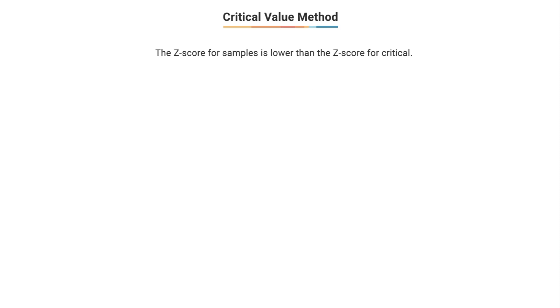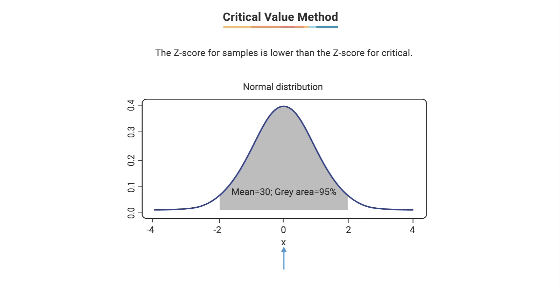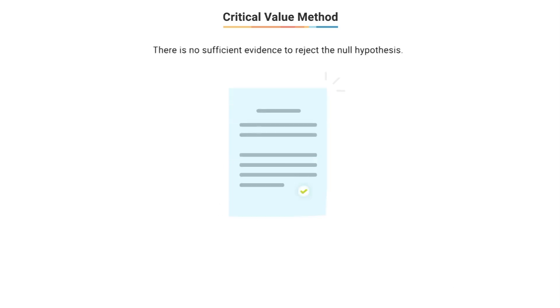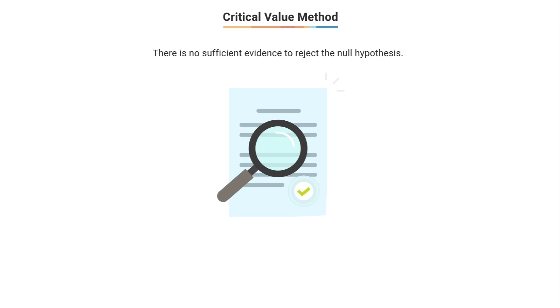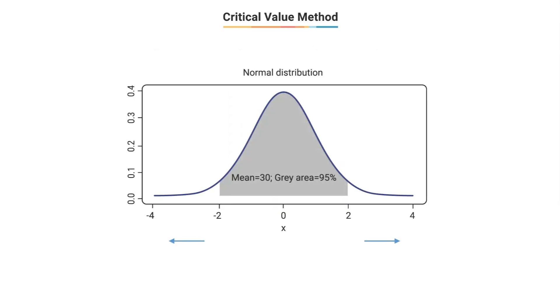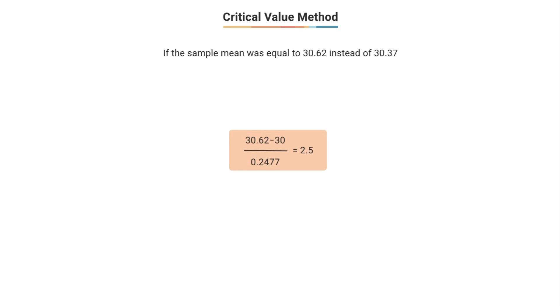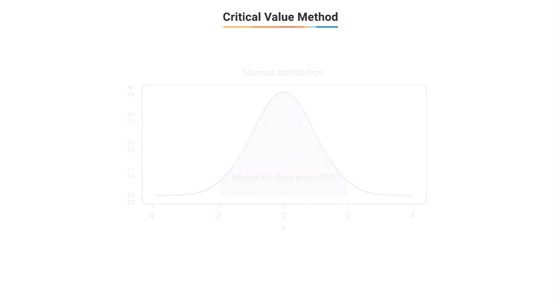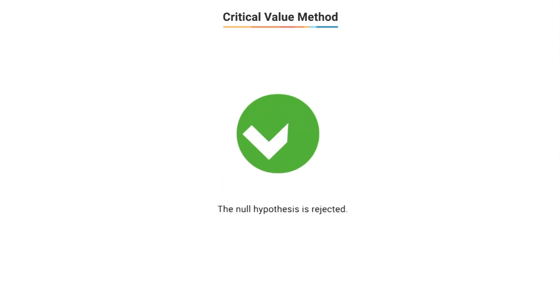Since the sample z-score is less than the critical z-score, we fail to reject the null hypothesis — we stick to the default belief that the Max phone takes 30 minutes to recharge. This does not mean we accept the null hypothesis; it only means we don't have sufficient evidence to reject it. If the sample z-score were further away from the center than the critical values, we would reject the null hypothesis. For example, if the sample mean had been 30.62, the z-score would be approximately 2.5, which falls outside the 95% region, and we would reject the null.